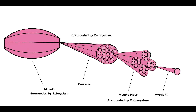Sarcomeres are the contractile units of skeletal muscle. They are arrangements of actin and myosin, responsible for contracting skeletal muscle. I just showed this to you in order to demonstrate how organized skeletal muscle is. Now we're going to look at the region of a muscle cell where excitation-contraction coupling is going to occur.